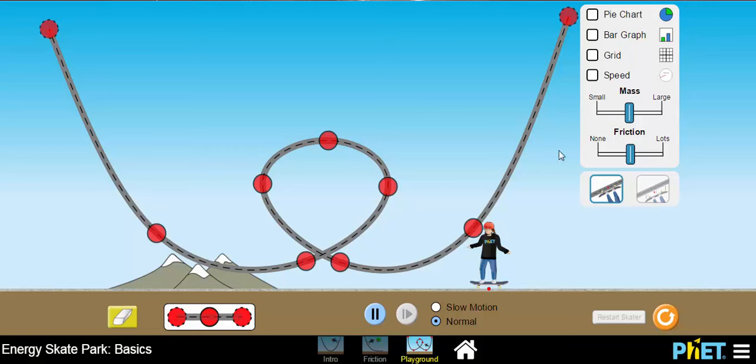Below that, we can also toggle the mass. And when we talk about mass, really what we're saying is the mass of the skater. And then we can also toggle the friction. So friction, of course, is the friction between the skateboard and the track itself. For this particular lab, we want to make sure that we're going to turn the friction off. And for now, we're going to leave the mass just as is.